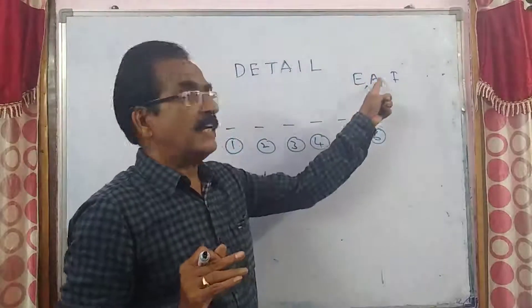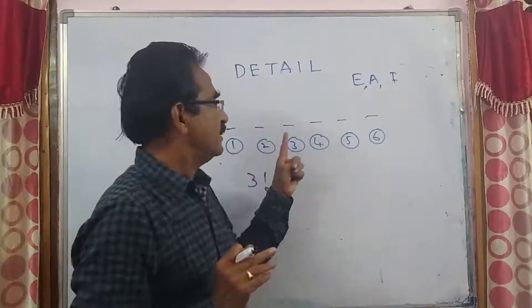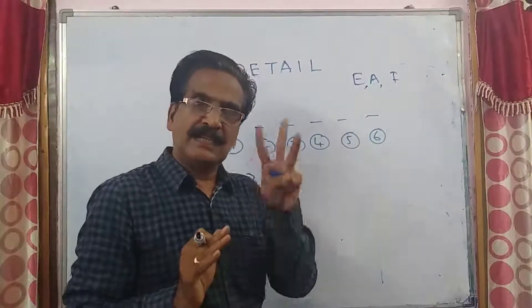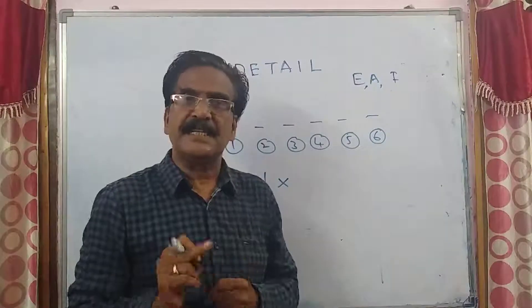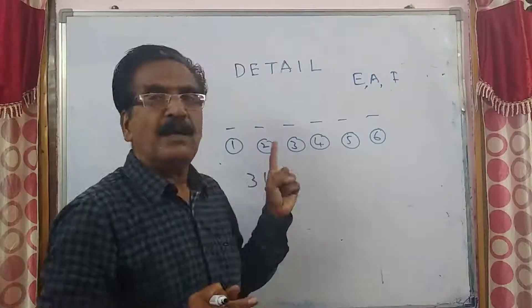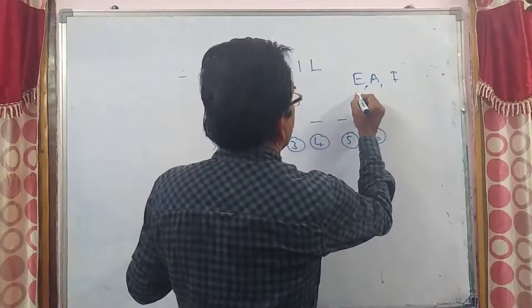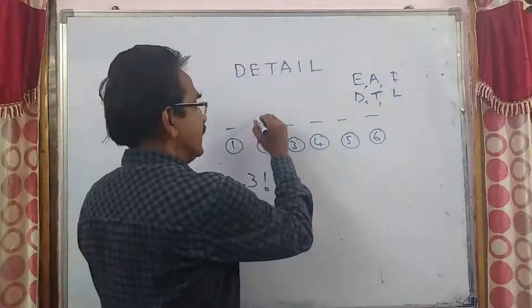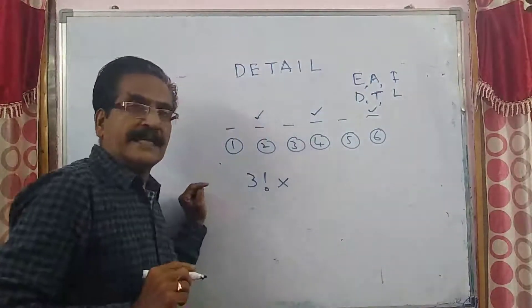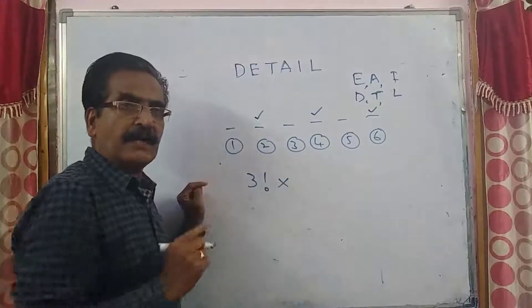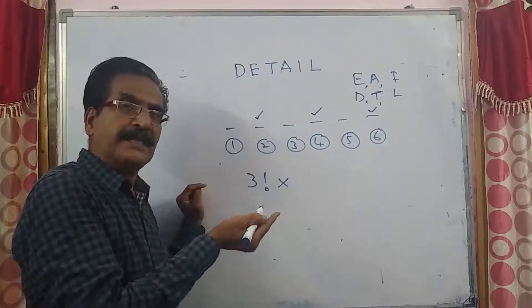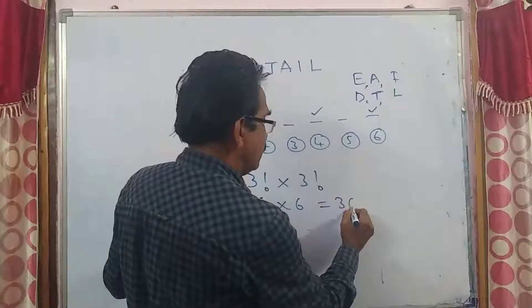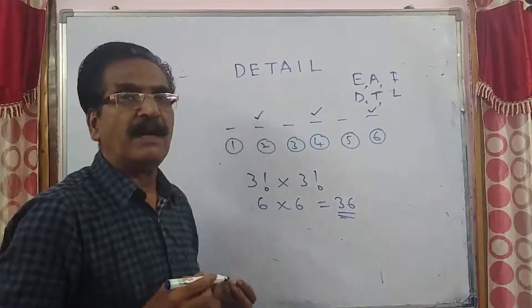Vowels are arranged in the odd places — 1st, 3rd, and 5th positions — in 3! ways. Now we arrange the remaining consonants D, T, L. These three consonants can be arranged in the remaining three even places — 2nd, 4th, and 6th positions — in three factorial ways. Total arrangements = 3! × 3! = 6 × 6 = 36 ways.